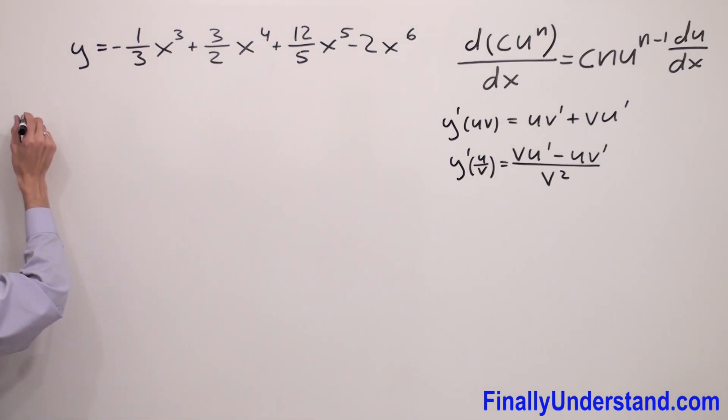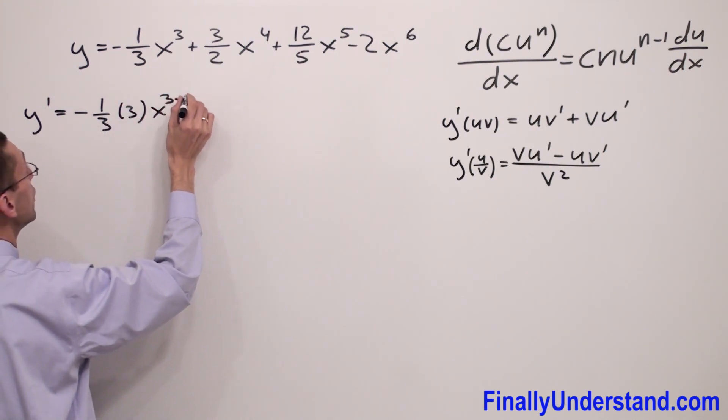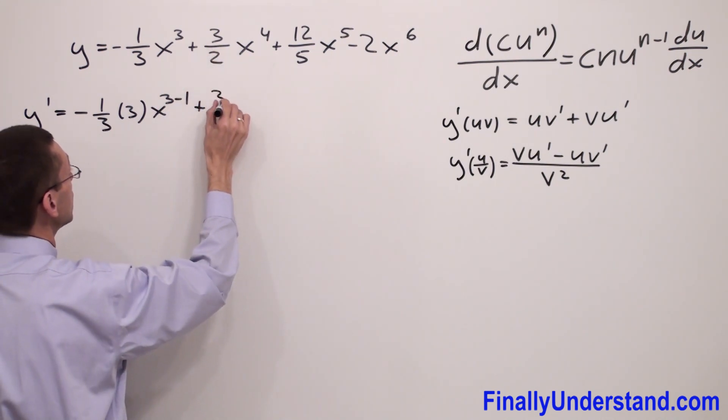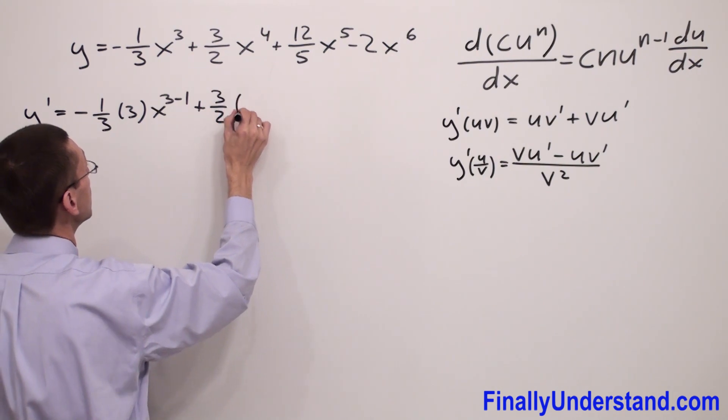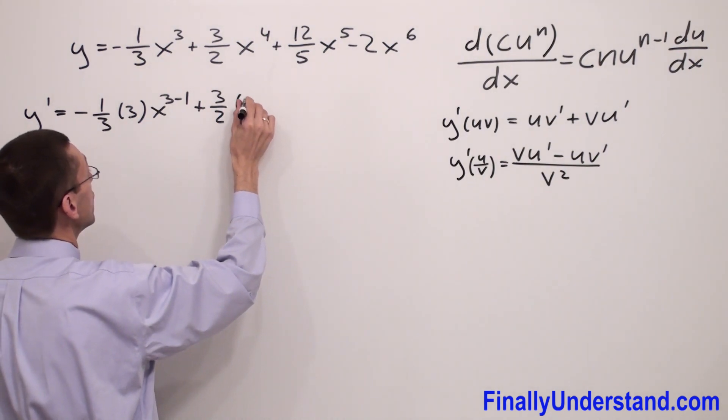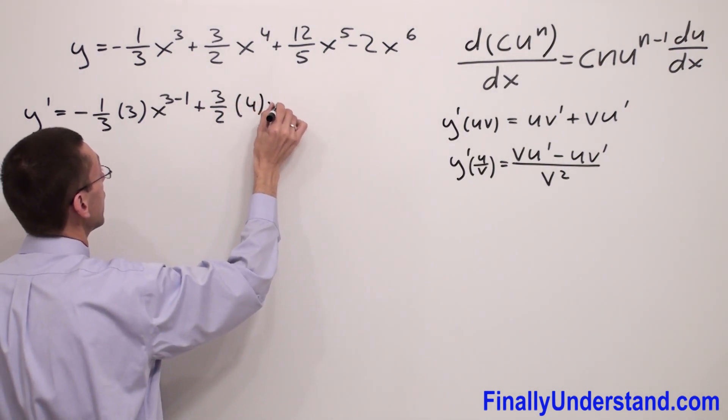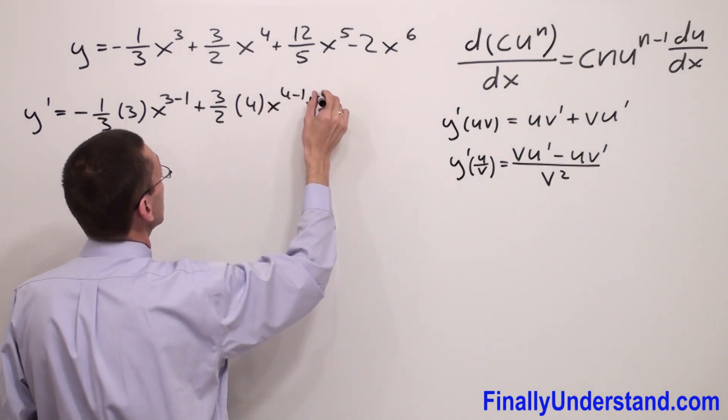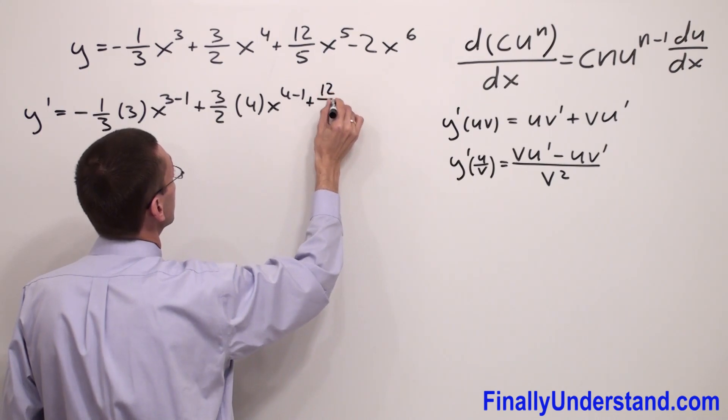So I have y prime equals negative, the constant 1/3 times the exponent, x to the exponent minus 1, that's 3 minus 1, plus the constant 3/2 times the exponent 4, x to the 4 minus 1, plus the constant 12 over 5...